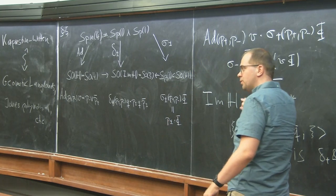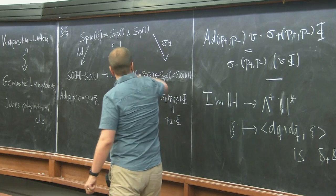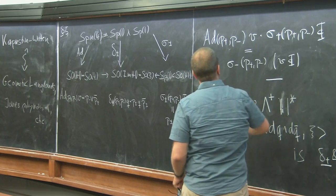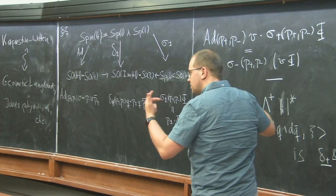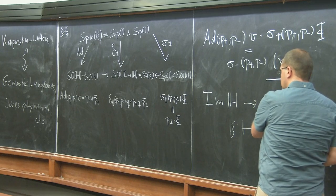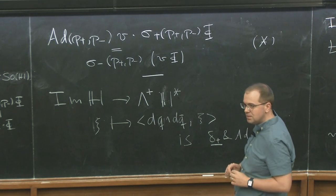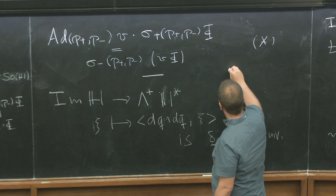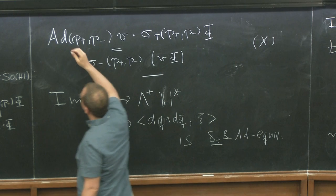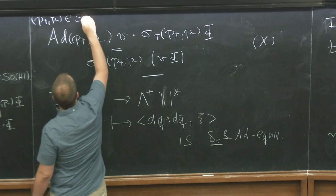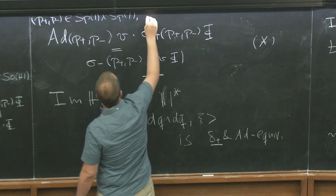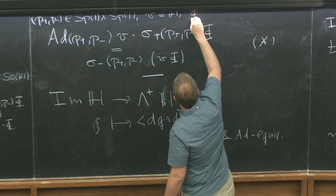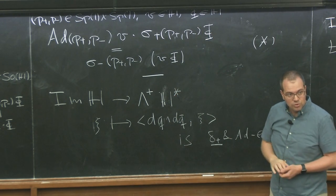Question: with respect to what action is this map equivariant? The group Sp(1) × Sp(1) acts on the spinors via Δ⁺ and Δ⁻; I'm taking the Δ⁺ action. This group also acts on H, and therefore has an associated action on Λ⁺H*, and that's the action on the other side. As for notation: p⁺, p⁻ are elements of Sp(1) × Sp(1), v is an element of H thought of as a vector because it transforms in the vector representation, and φ is also an element of H but thought of as a spinor because it transforms in the spinor representation.